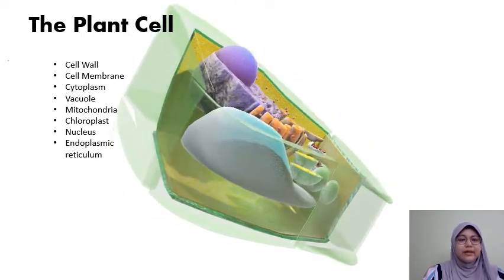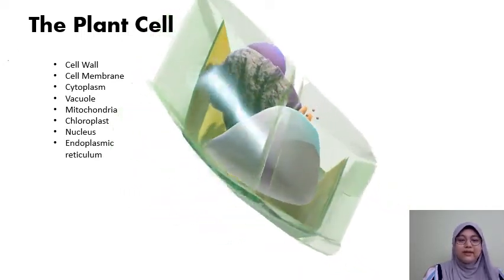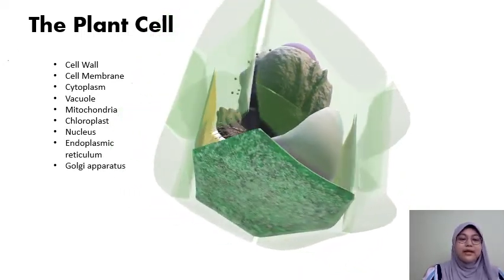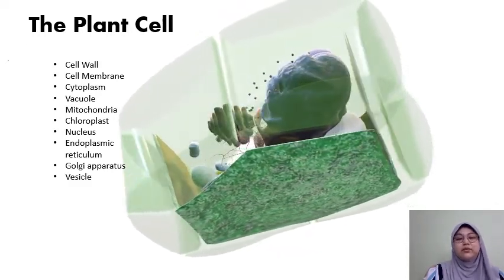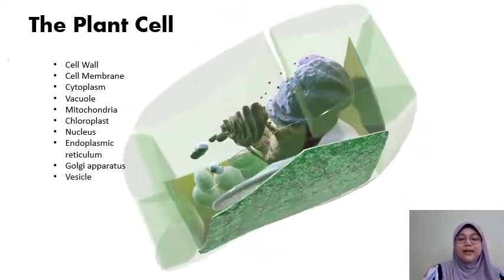Next we have the ER or endoplasmic reticulum, and then Golgi apparatus, and then vesicles. Those are all components of the plant cell.